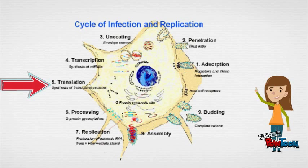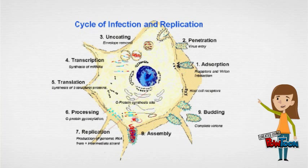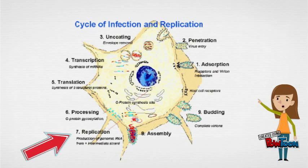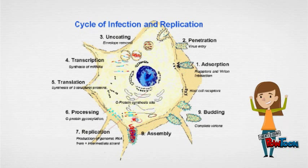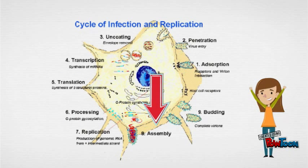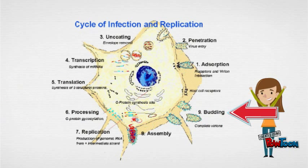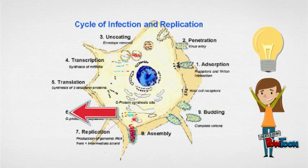Later, translation happens, which involves the synthesis of the N, P, M, G, and L proteins. Then, replication happens. The first step in viral replication is synthesis of full-length copies of the viral genome. When the switch to replication occurs, RNA transcription becomes non-stop. Then, assembly of the virus occurs, and lastly, the viruses are complete and are ready to infect the next host.